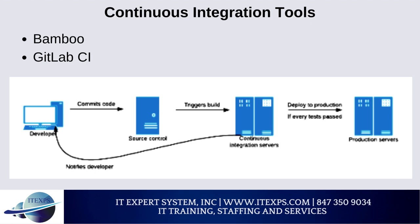GitLab CI is an open-source CI tool. It lets you use the GitLab API to install and set up projects hosted on GitLab. GitLab CI can help you test and build projects and deploy your builds. It indicates areas that require improvement and lets you secure project data using confidential issues.